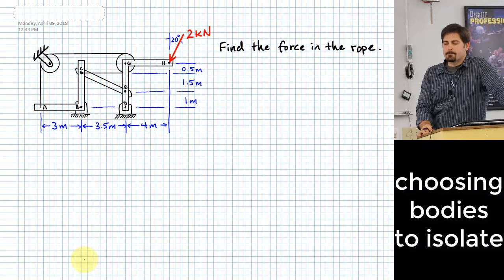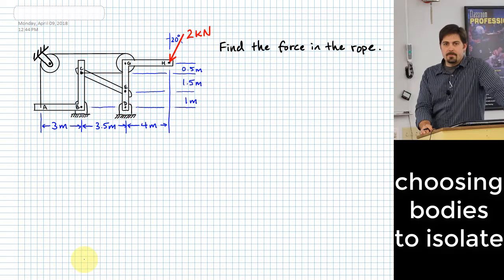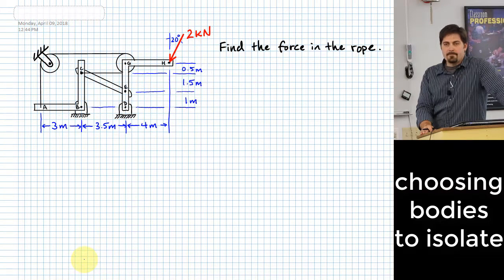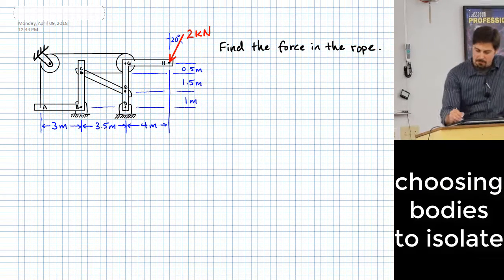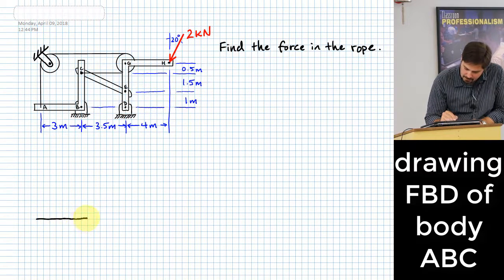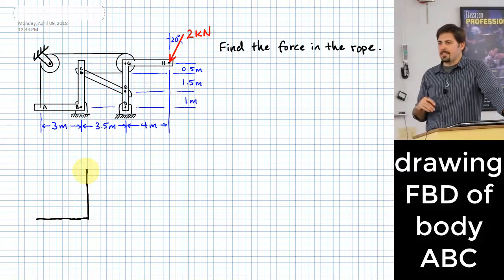What do you want to do first? One of the things you probably want to do is separate bodies that the rope affects, because once you separate them, you can identify the effect of the rope on those bodies. Body ABC might be something good to go ahead and do a free body diagram of all by itself.